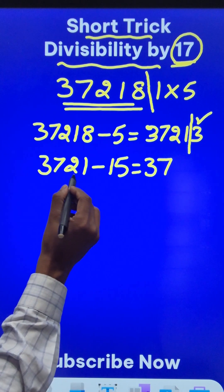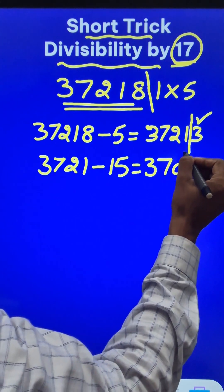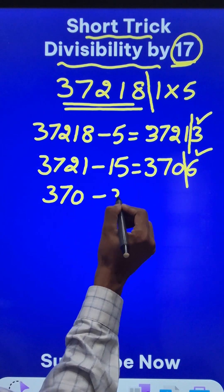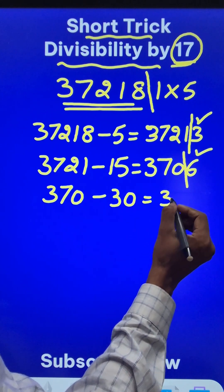you get 3706. Separate out the last digit, 370 is the remaining number, minus 5 times 6 is 30, so you get 340.